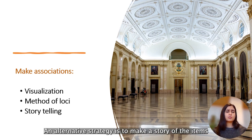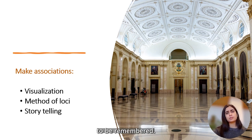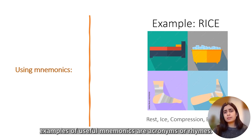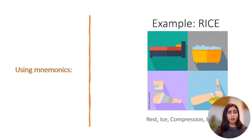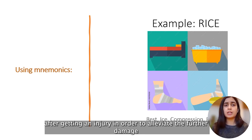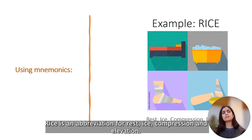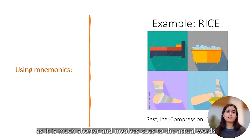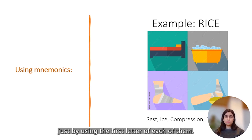An alternative strategy is to make a story out of the items to be remembered. Use of mnemonics is another method for verbal memory. Examples of useful mnemonics are acronyms or rhymes. The RICE acronym is used in sports to remember important actions after getting an injury to alleviate further damage and pain. RICE stands for Rest, Ice, Compression, and Elevation. It is easier to remember acronyms such as RICE because it is much shorter and provides cues to the actual words using just the first letter of each.